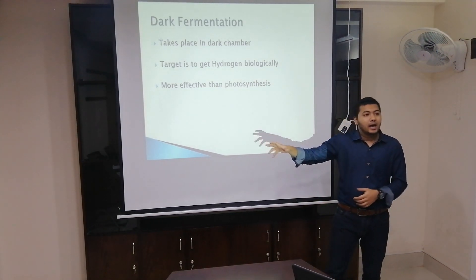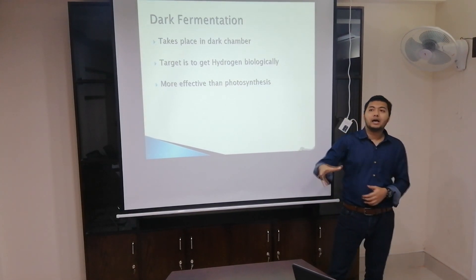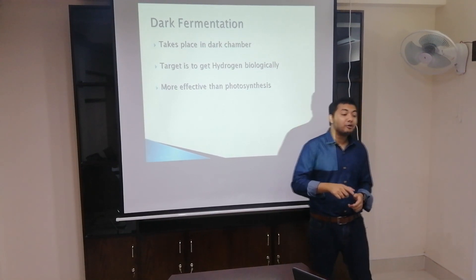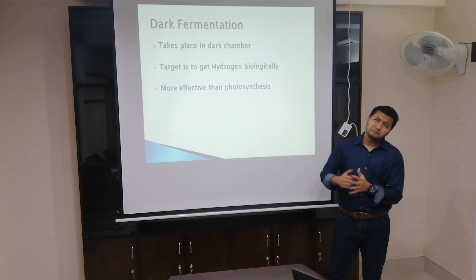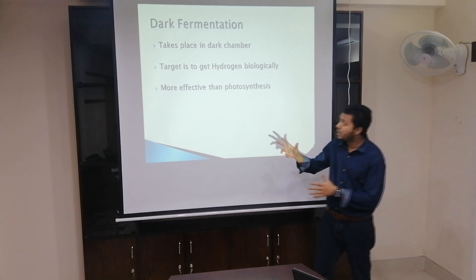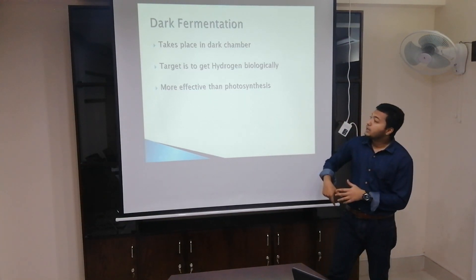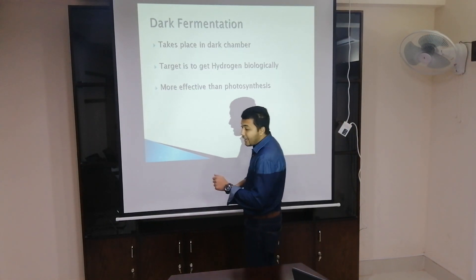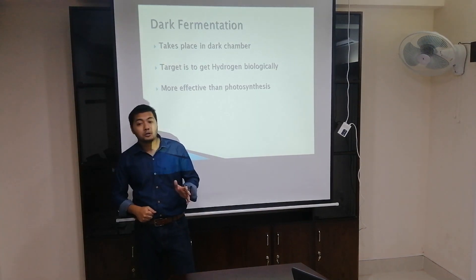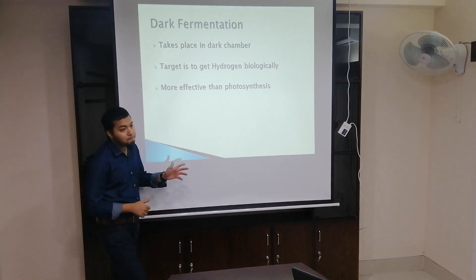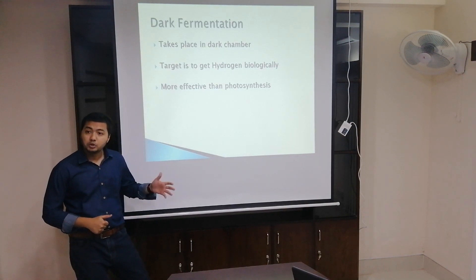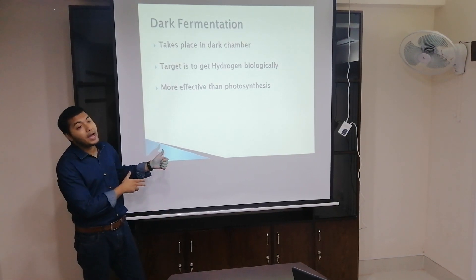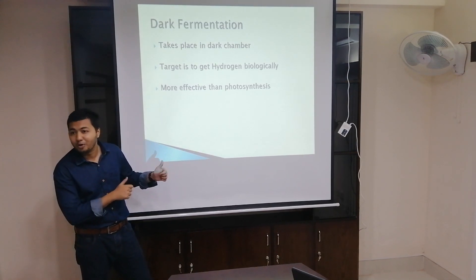Dark fermentation takes place in a dark chamber. It is basically used to produce hydrogen biologically. There are also other ways to produce hydrogen biologically, such as light-driven and electrochemical methods, but dark fermentation performs well. It is more effective than photosynthesis, though it is greatly dependent on downstream processes because volatile fatty acids or alcohols can be produced as byproducts, which can reduce efficiency.